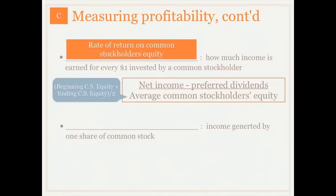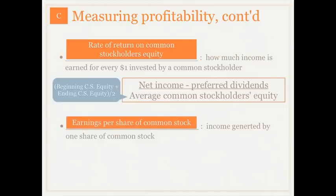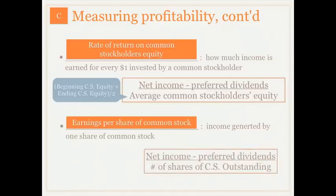The second way to measure profitability that we're looking at in this part of our series is earnings per share of common stock. This ratio is actually a very important one, as it also will appear at the bottom of the income statement. Earnings per share of common stock is the amount of income that is generated by one share of common stock that's outstanding. To calculate earnings per share, we're going to take net income, subtract out preferred dividends — because we're only talking about common stock here — and divide that by the number of shares of common stock that is outstanding.